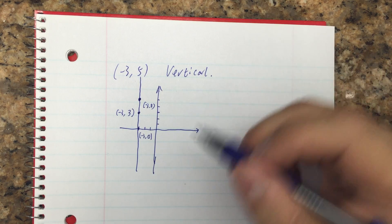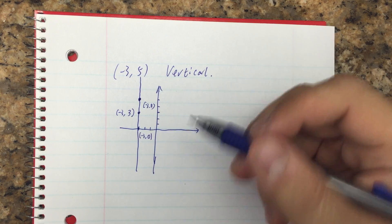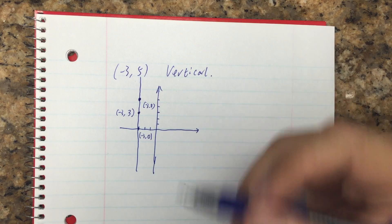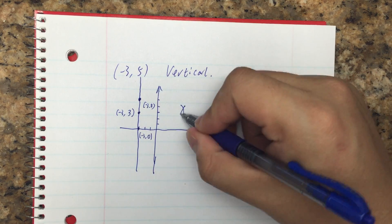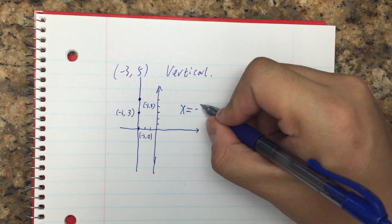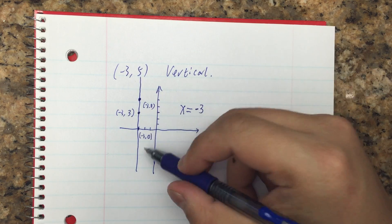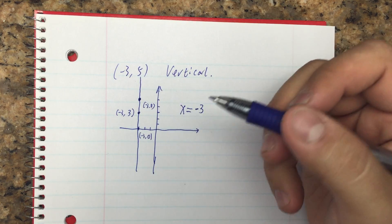It shows me that the y value will not affect the x value. The x value stays the same, -3, and the y value keeps changing.